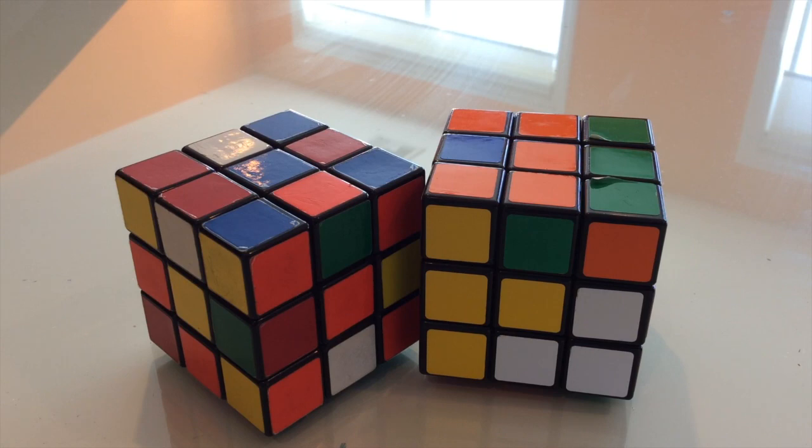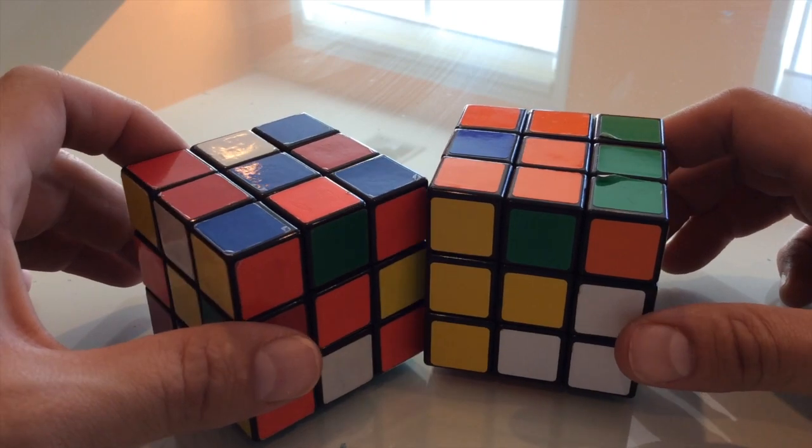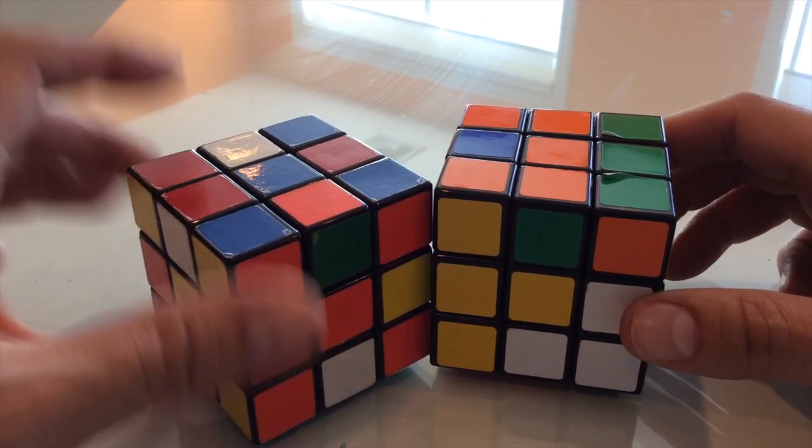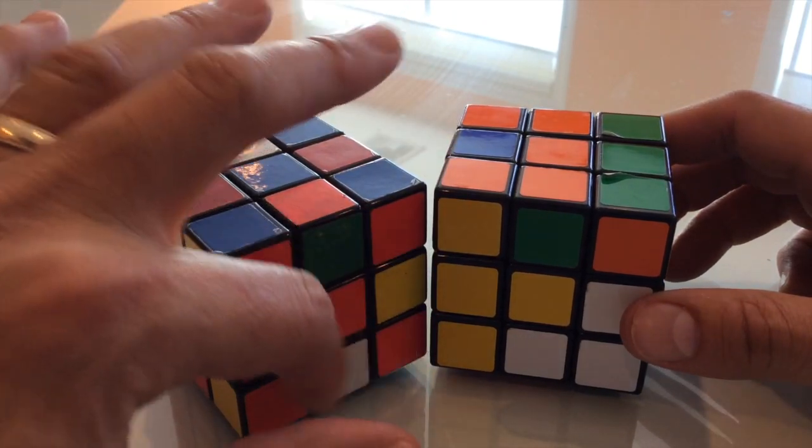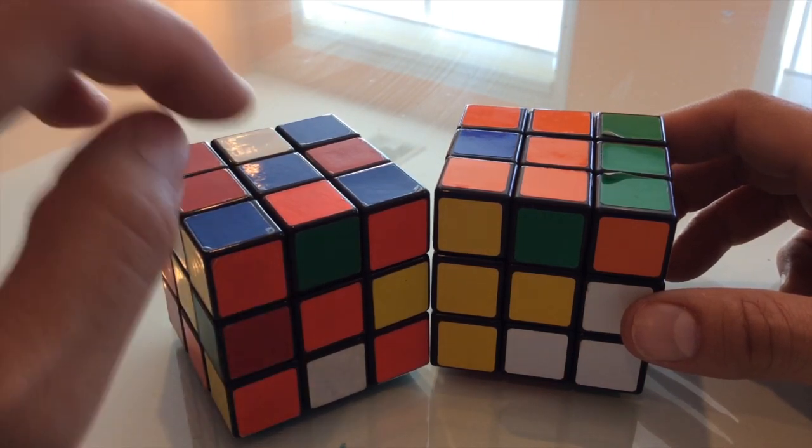And just to give you a quick rundown of what happens, I solve the cube differently than most people do. I don't use the top layer, middle layer, bottom layer method. I use what I call the X's and O's method.